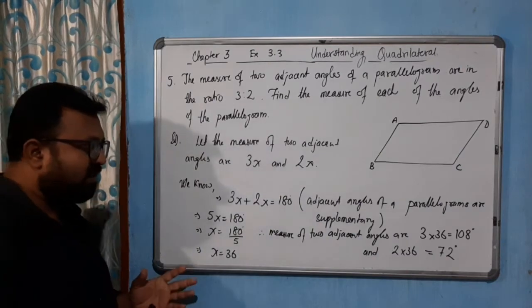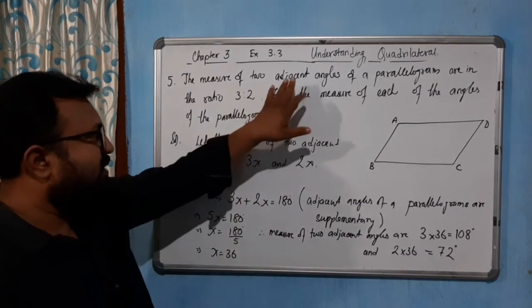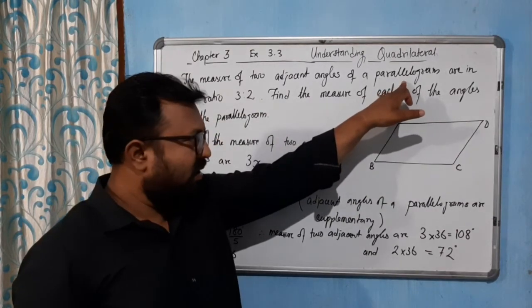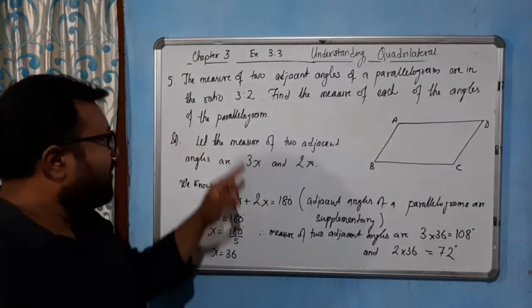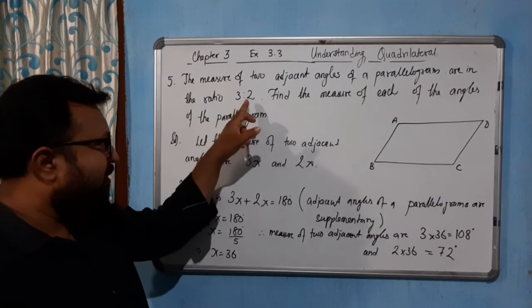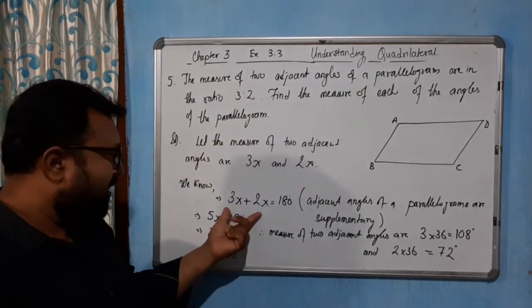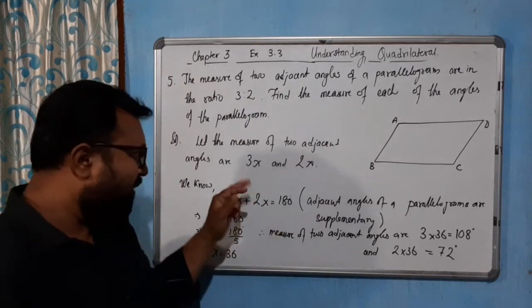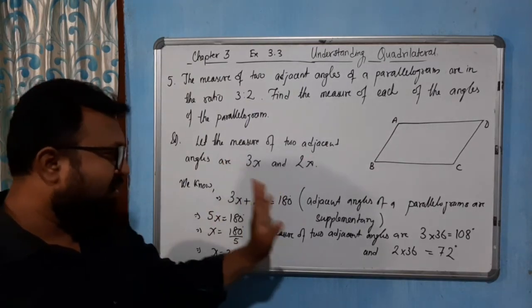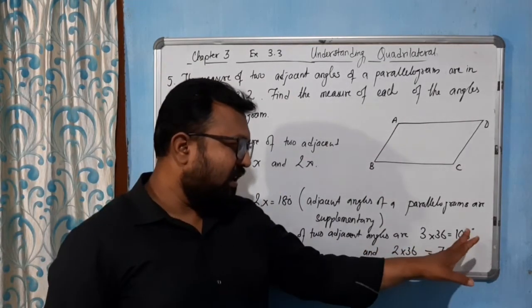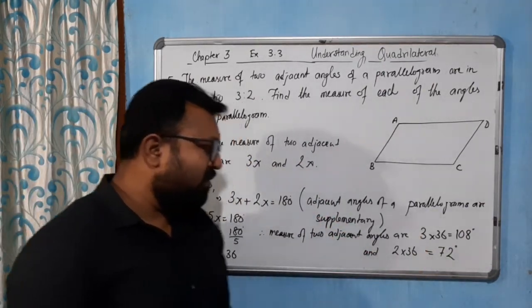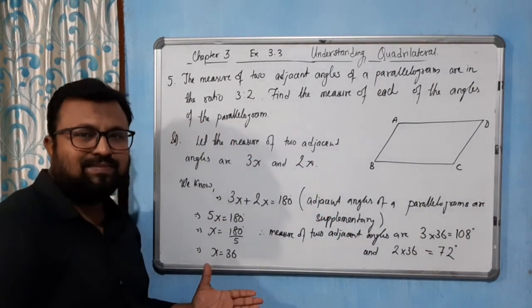And this is very simple. We know that the sum of two adjacent angles is equal to 180 degrees in case of a parallelogram. So we took one as 3x and one as 2x. Sum of this is 180 degrees. We got the value of x. Now we put the value of x in these two cases. This is 3x equal to 3 into 36, which is 108. 2x equal to 2 into 36, which is 72. Hope you have enjoyed this part.